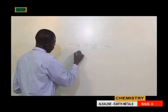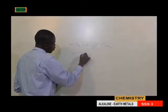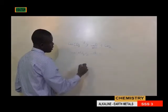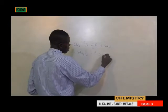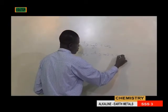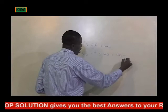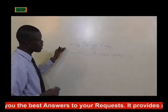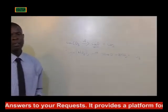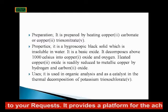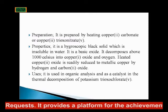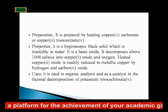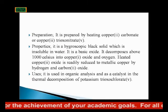Also, when you have copper(II) nitrate and heat it, it gives copper(II) oxide plus nitrogen dioxide and oxygen. So these are the two ways by which copper(II) oxide can be prepared. Properties of copper(II) oxide: it is a hygroscopic black solid.